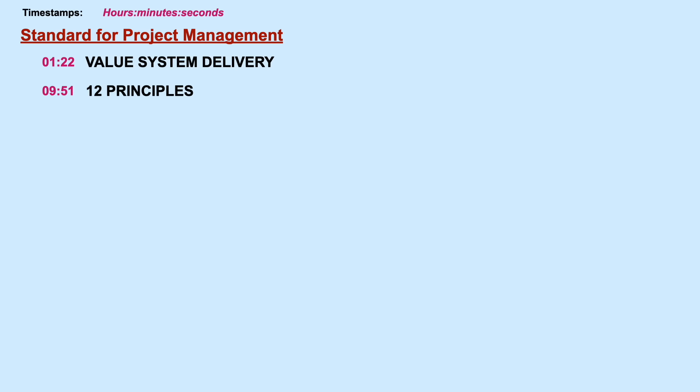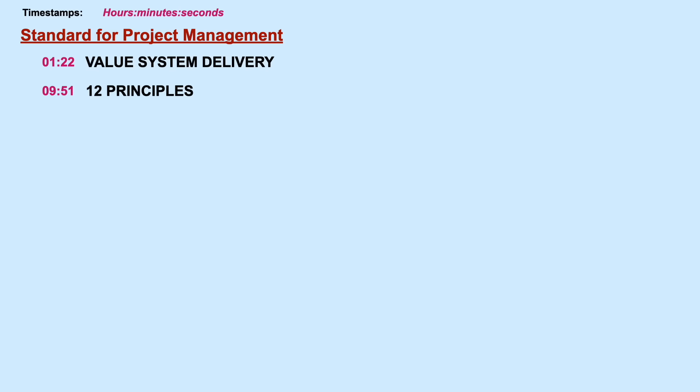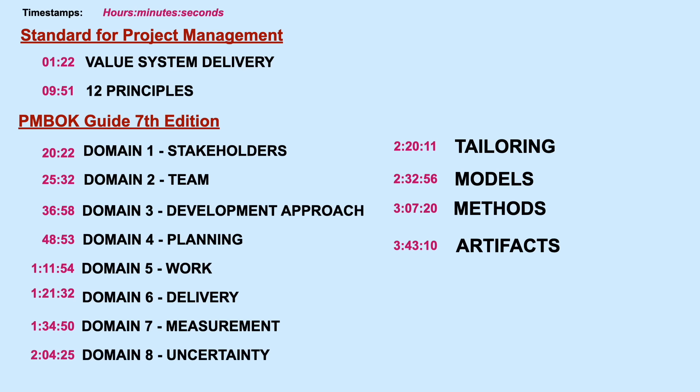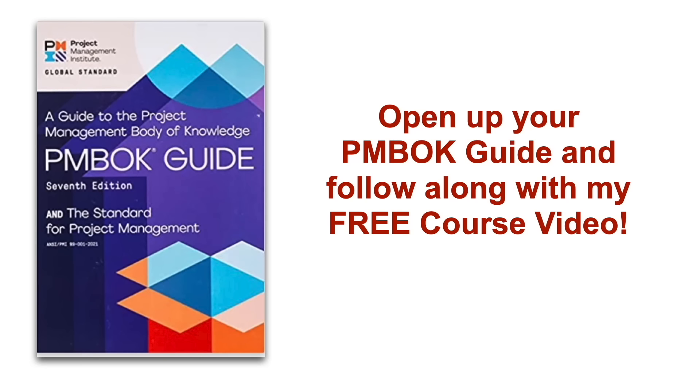We'll first go through the standard for project management because it explains the system for how value is delivered and the 12 principles that influence every domain. Then we'll go through each performance domain that makes a project successful, followed by how to tailor a project and the appropriate models, methods, and artifacts that you can use. I 100% recommend grabbing a physical hard copy of the PMBOK guide and I'll include links in the description bar below.